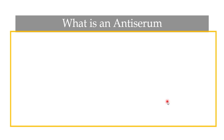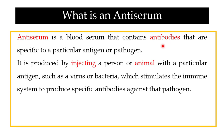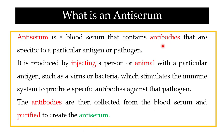Bismillah ar-Rahman ar-Rahim and welcome back to this next video — lecture number eight on immunology. In my previous video I told you about anti-serum: that anti-serum is a blood serum that contains antibodies against a particular antigen or pathogen, and that we produce these anti-serums by injecting the desired bacteria or virus into animals. The animals produce specific antibodies against that pathogen, and then we purify those antibodies and use them as an anti-serum.